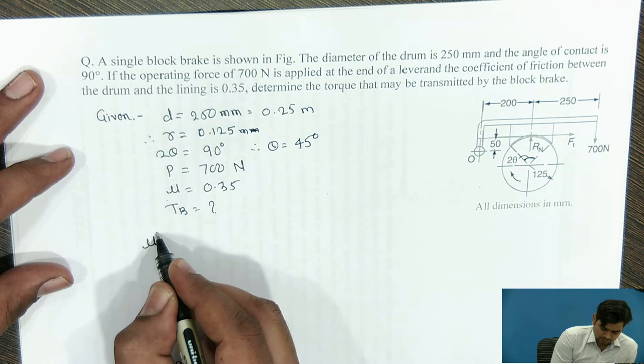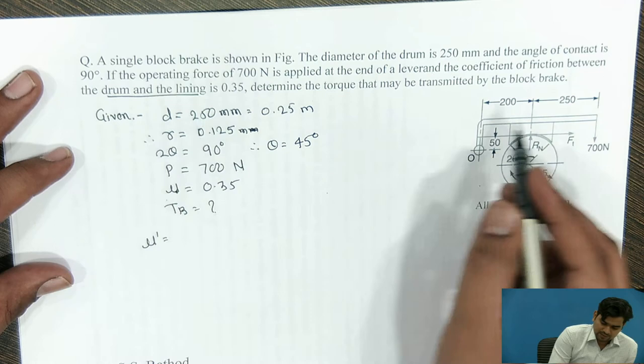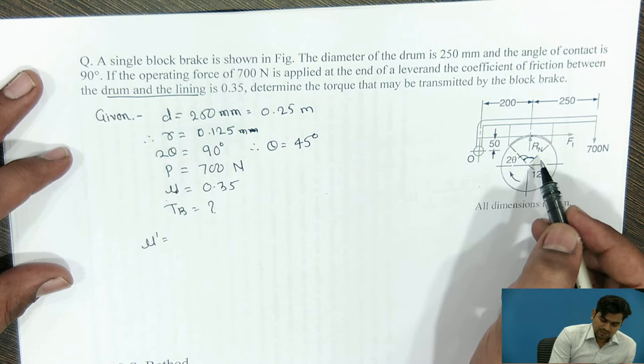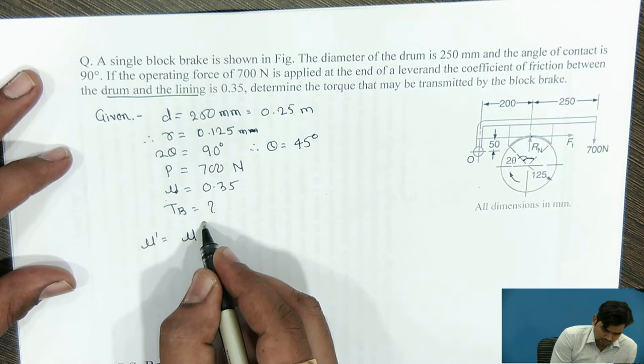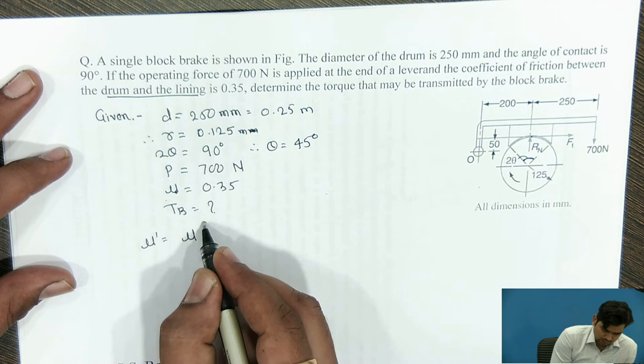Since the angle 2θ is greater than 60°, we must calculate the value of μ dash. The actual coefficient of friction between drum and lining is μ = 0.35. As 2θ is greater than 60°, the pressure is not uniformly distributed over the block, so we find μ dash using the formula: μ dash = μ × (4 sin θ) / (2θ + sin 2θ).